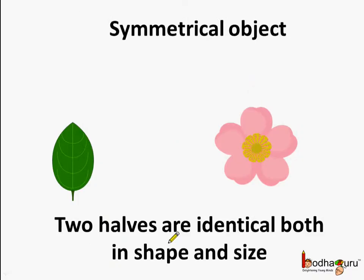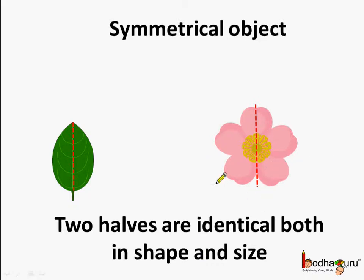So, when the two halves of an object are identical, meaning they are similar in shape and size — like the right half and the left half of this leaf is identical, and the same in the case of this flower, both halves are identical — such objects are called symmetrical objects.